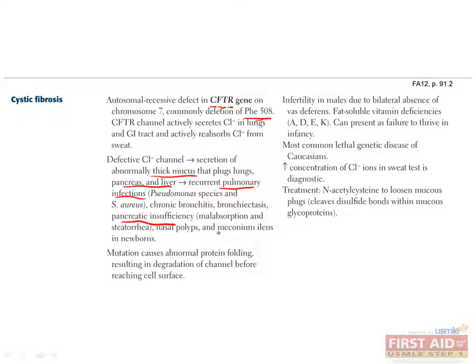One of the first symptoms to present is meconium ileus in newborns, since the meconium is abnormally thick and forms a mechanical obstruction, resulting in abdominal distention and vomiting soon after birth. The majority of meconium ileus is due to cystic fibrosis, so if you see this symptom on your test, think of this disease. However, only a minority of patients with cystic fibrosis have meconium ileus, so don't use the lack of this symptom to rule out cystic fibrosis.